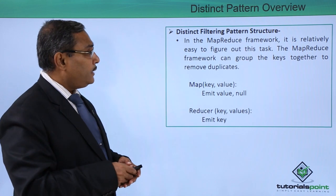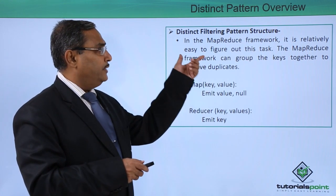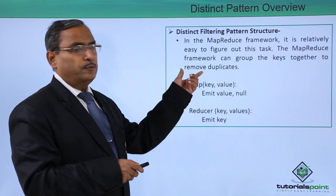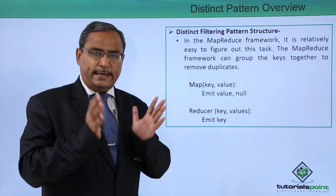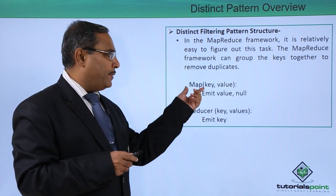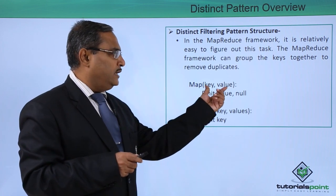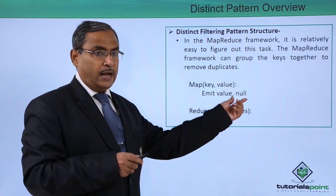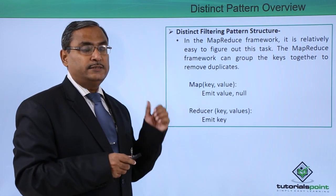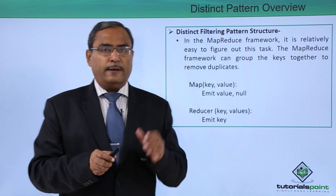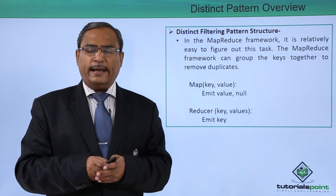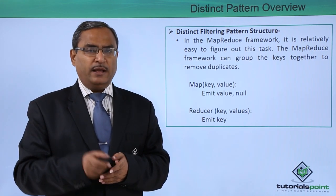Distinct filtering pattern structure: in the MapReduce framework, it is relatively easy to figure out this task. The MapReduce framework can group the keys together to remove duplicates. The map will take the key-value pair as input and it will emit the value with null, and the reducer will also take the key-value pairs as input and emit the key, which is the distinct set of keys. In the next videos, we will be going for more detailing about its implementation and some other discussion. Thanks for watching this video.